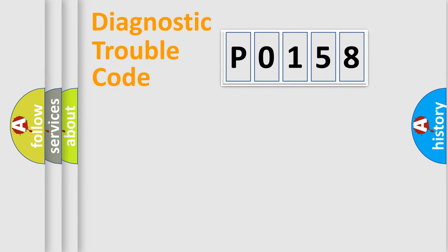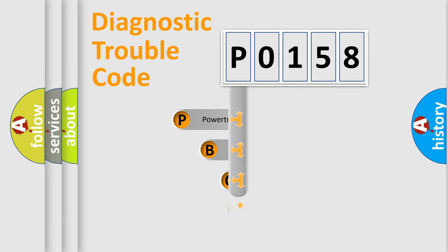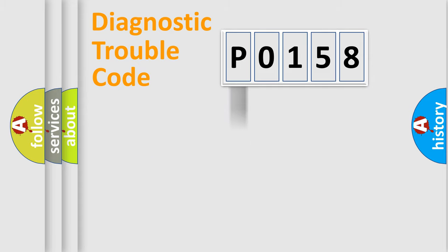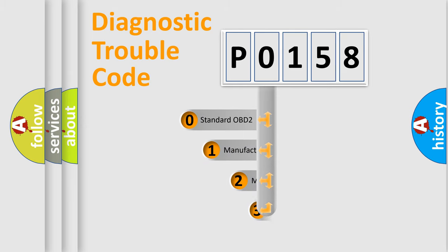First, let's look at the history of diagnostic fault code composition according to the OBD2 protocol, which is unified for all automakers since 2000. We divide the electric system of the automobile into four basic units: Powertrain, Body, Chassis, and Network. This distribution is defined in the first character of the code.